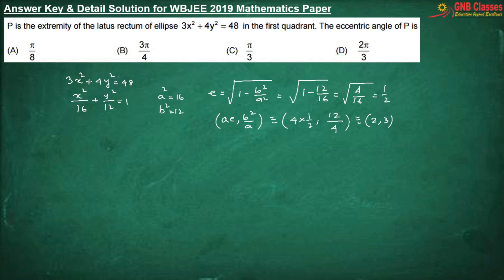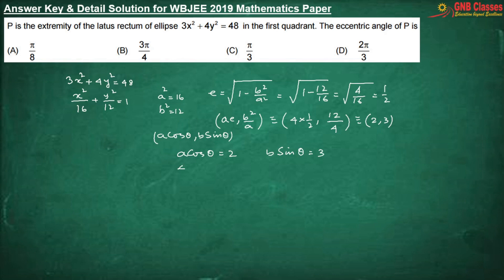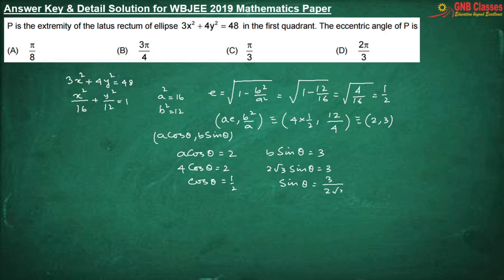Any point on the ellipse can be written as (a cosθ, b sinθ), where θ is the eccentric angle. Here a cosθ = 2 and b sinθ = 3. Since a = 4, cosθ = 1/2. And b = 2√3, so sinθ = √3/2.